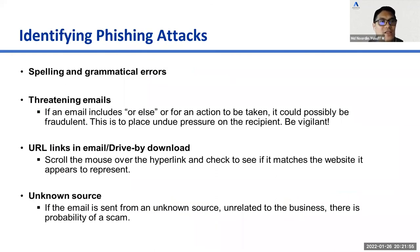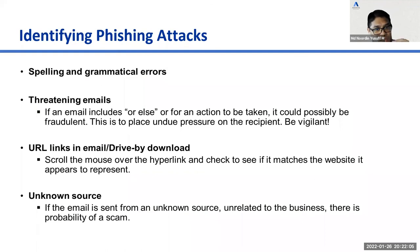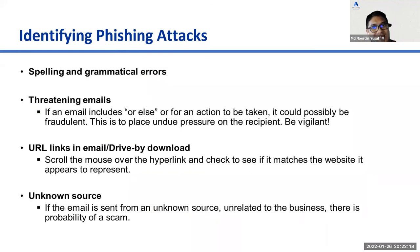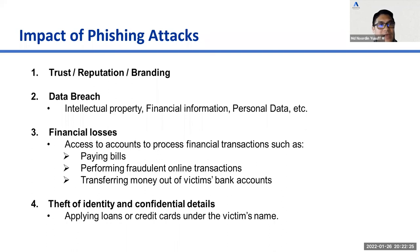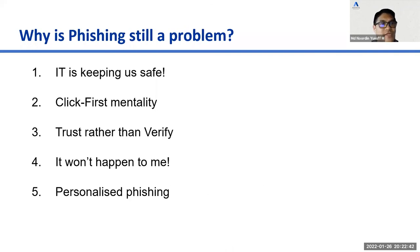Ways to identify phishing attacks include spelling and grammatical errors — though hackers are becoming smarter, so these are less common now. Emails can be threatening to induce urgency. Always look at the URL by hovering over the link. If the email is from an unknown source unrelated to business, the probability of it being a scam is high. The impacts of phishing include damage to trust, reputation, and branding; data breaches; financial losses; and theft of identity and confidential details.